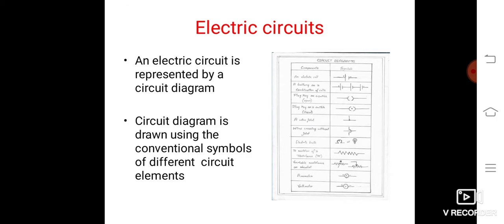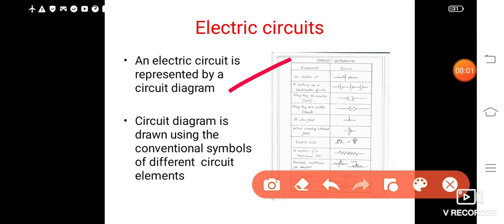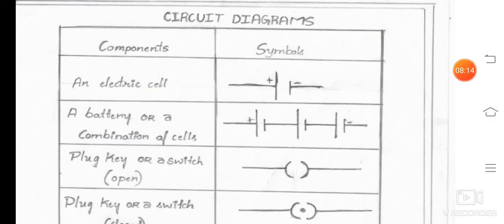Circuit diagram is drawn using the conventional symbols of different circuit elements. Circuit will have several elements. Circuit will have resistors, inductors, batteries, wires, switch, voltmeter, ammeter. There are so many things that will be present in the circuit. An electric circuit is represented by a circuit diagram. Circuit diagram is drawn using conventional symbols of different circuit elements. There are some conventional symbols which are used for each of the electrical circuit. Now I will tell you about all such symbols.